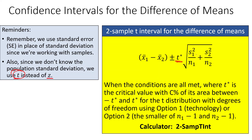We're working with something called standard error instead of standard deviation for the sampling distribution — specifically the standard error of x1-bar minus x2-bar — because we're working with sample standard deviations and not population standard deviations. Those are the key differences when working with means.